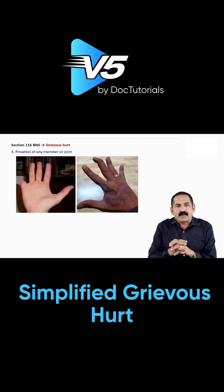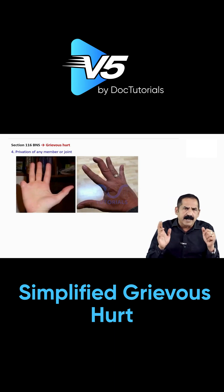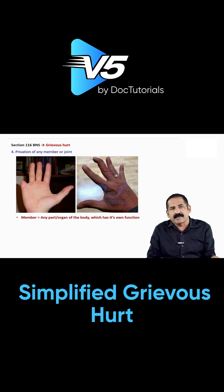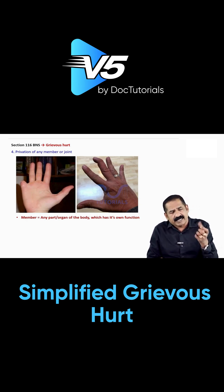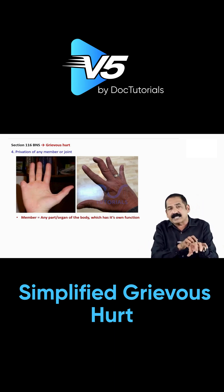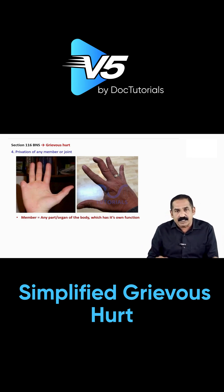Number four: privation of any member or joint. Member means any part or organ of the body which has its own function. For example, our fingers are a member of the body. The eye, liver, and even the fingernail are members of the body. The fingernail is used for picking, scratching, or removing thorns, so almost everything we use in our body is a member of our body.